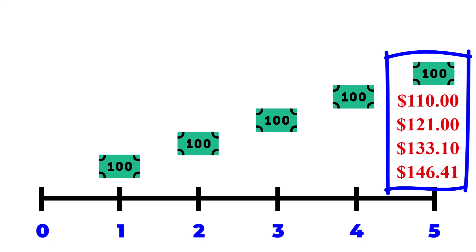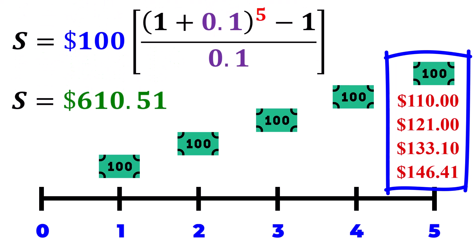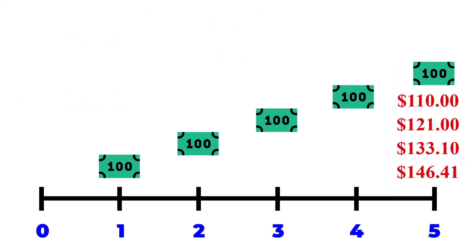Adding these values up, we get a total of $610.51, which was the same as when we used the ordinary simple annuity formula. As you can tell, using the ordinary simple annuity formula is generally easier than calculating this in chunks. Which leads us to ask, how does this formula neatly encompass all these calculations?